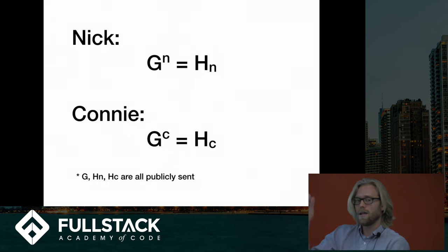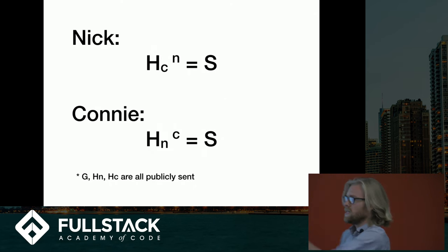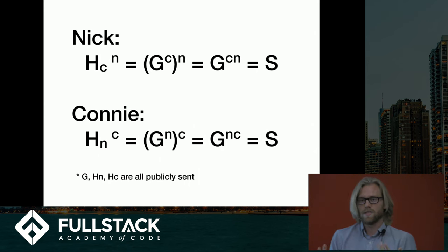For Nick, that'd be G^N, and then they create this H term. Once they have this H, they exchange those H's, so they send it to the other person. Now Nick has Connie's H, and Connie has Nick's H. Then they take that value and raise it to their secret again. They're actually going to end up with the same number, the same secret, after this whole protocol. We can see why—basically because of how multiplication and exponents work, that whole process boils down to G^(CN) for Nick, and G^(NC) for Connie. Multiplication doesn't matter what order you do, so the exponents are the same, so the secret's the same.